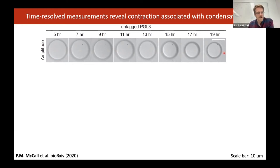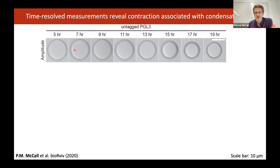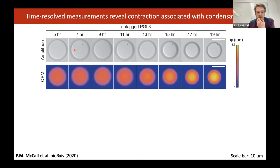The initial thought was that you could have Ostwald ripening — where material from small droplets preferentially moves towards larger droplets. But with QPI, what we could actually see was that even though the droplets were getting smaller, the phase was increasing. That can't be explained by simple Ostwald ripening — if the droplet was just getting smaller with the same material, the heights going down, you'd expect the phase to go down. Because it went the other direction, we knew the concentration inside the droplets was actually increasing with time.